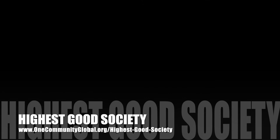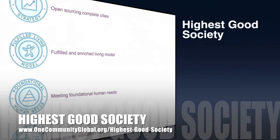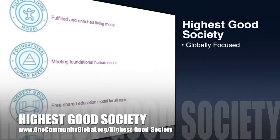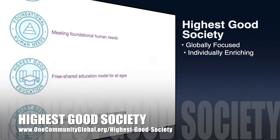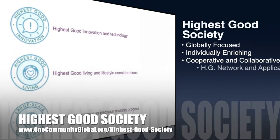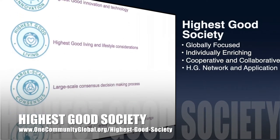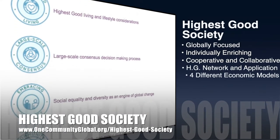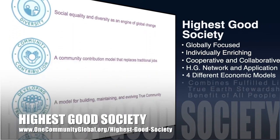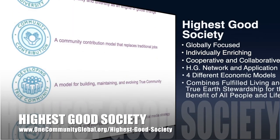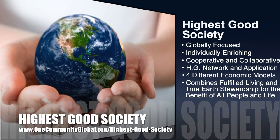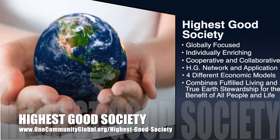The One Community approach to highest good society is globally focused, individually enriching, cooperative and collaborative, includes a highest good network and application, four different economic models, and combines fulfilled living and true Earth stewardship for the benefit of all people and all life on this planet.